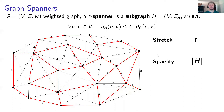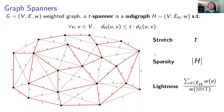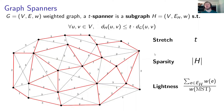Today, we will also talk about another parameter called lightness, which is the ratio between the weight of the spanner to the weight of the MST. The weight of the spanner is simply the sum of all the weights of all the edges in the spanner. In other words, the MST is the minimal possible spanner — if your spanner doesn't even have the weight of the MST, then your spanner is not connected, and therefore the stretch is infinite. So lightness measures how much more than the minimal the weight of your spanner is.